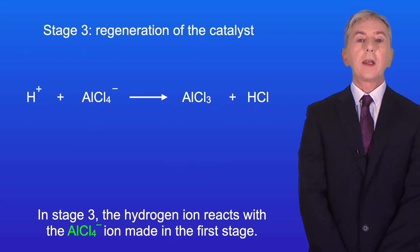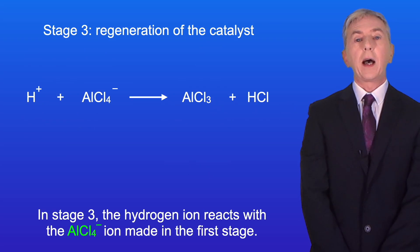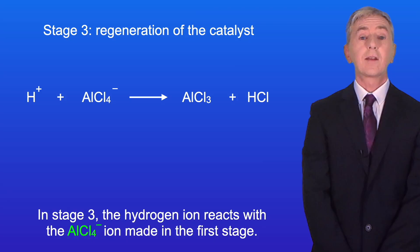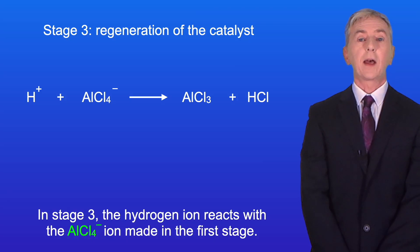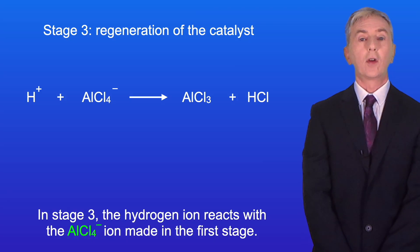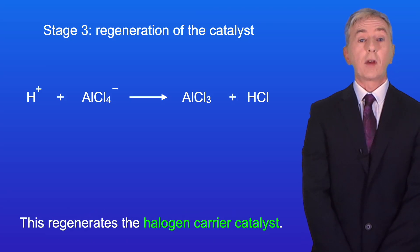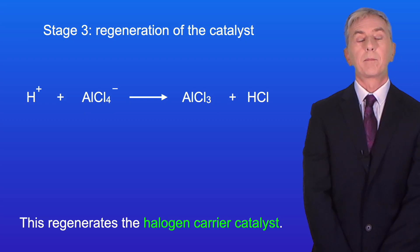In stage three the hydrogen ion reacts with the AlCl4⁻ ion made in the first stage. This regenerates the halogen carrier catalyst.